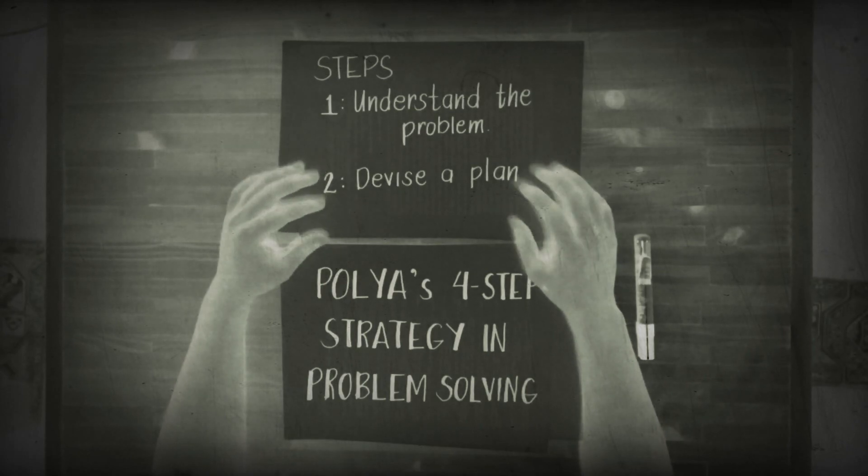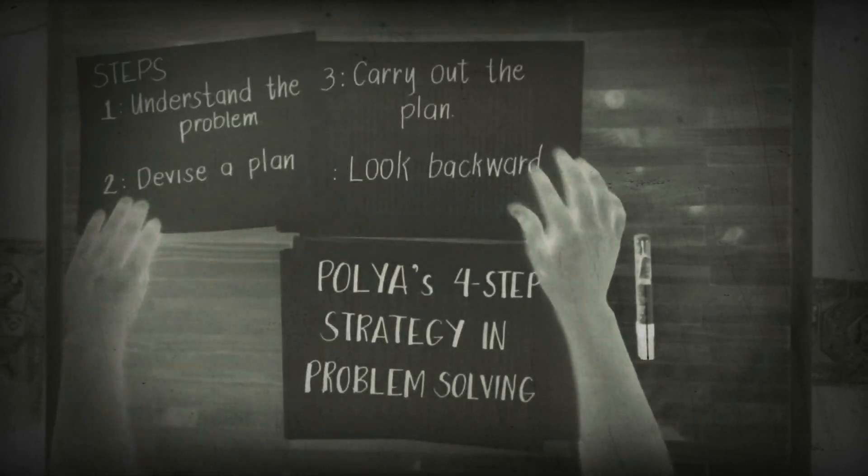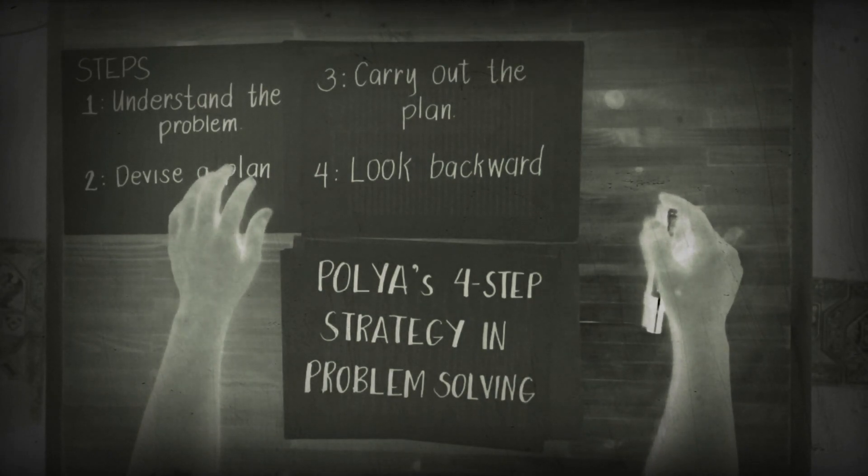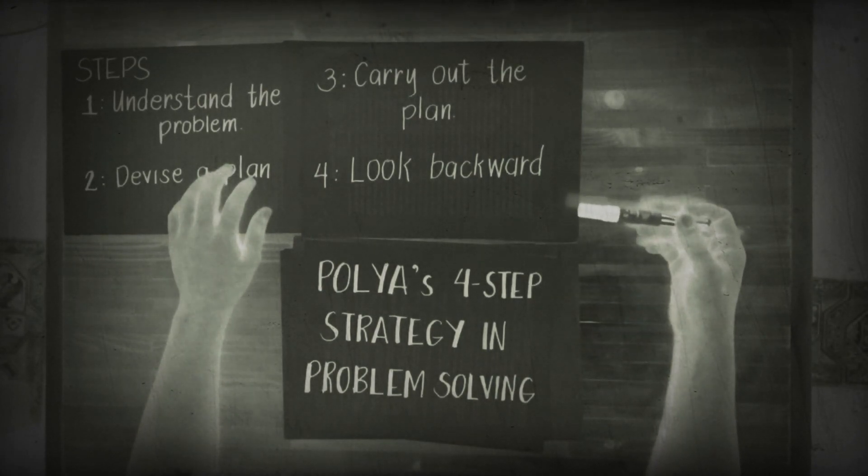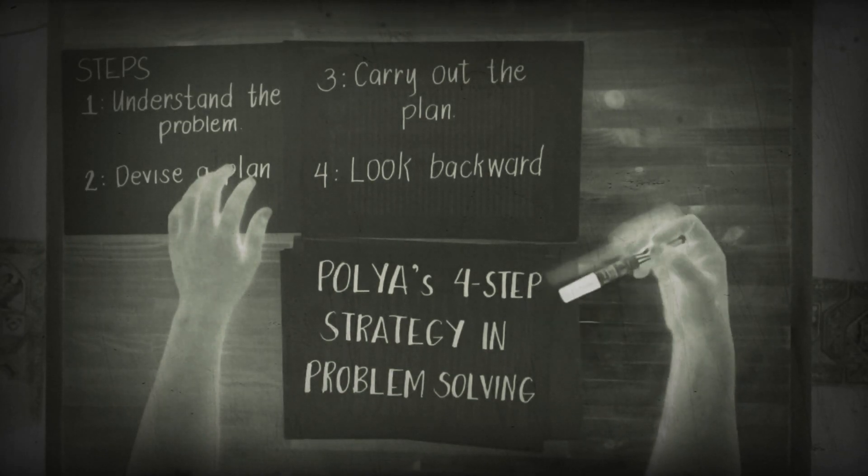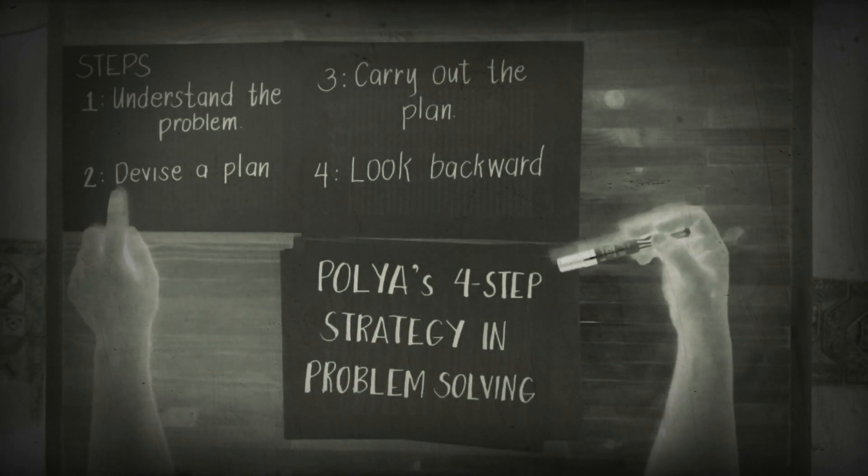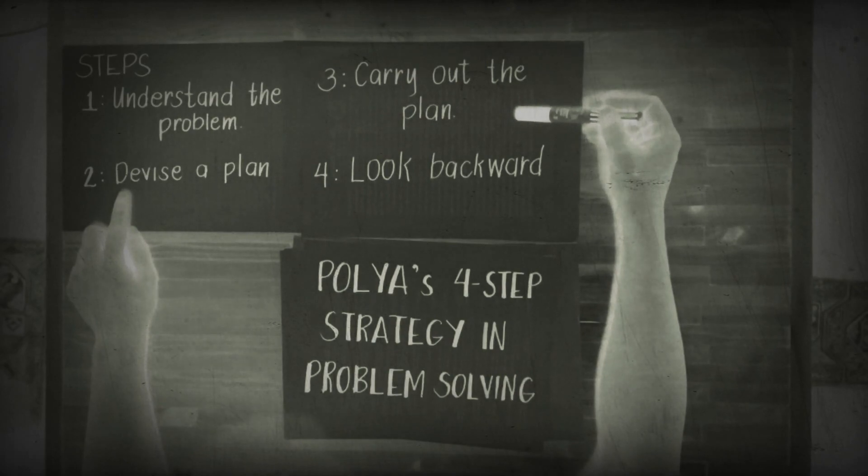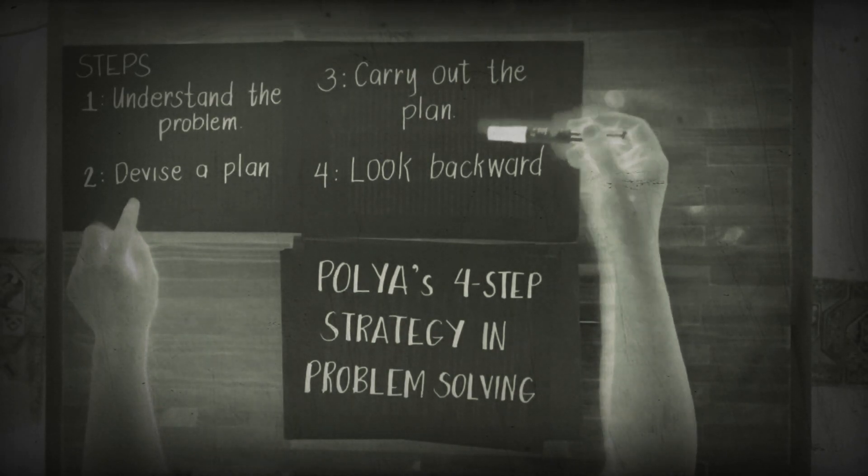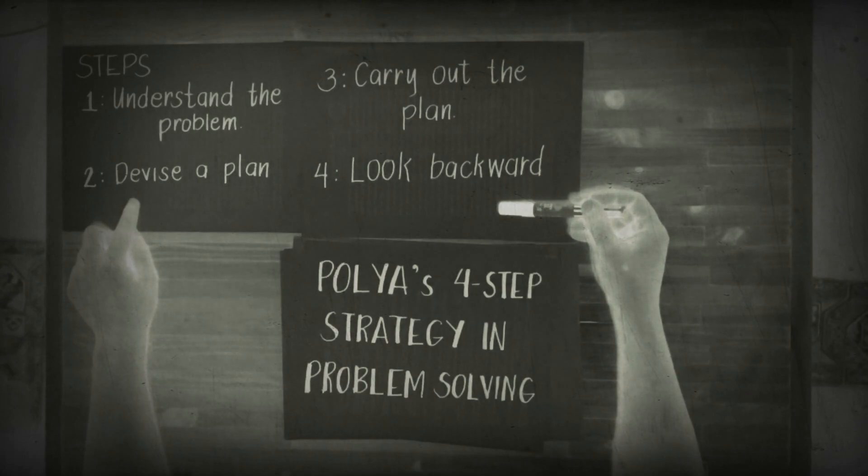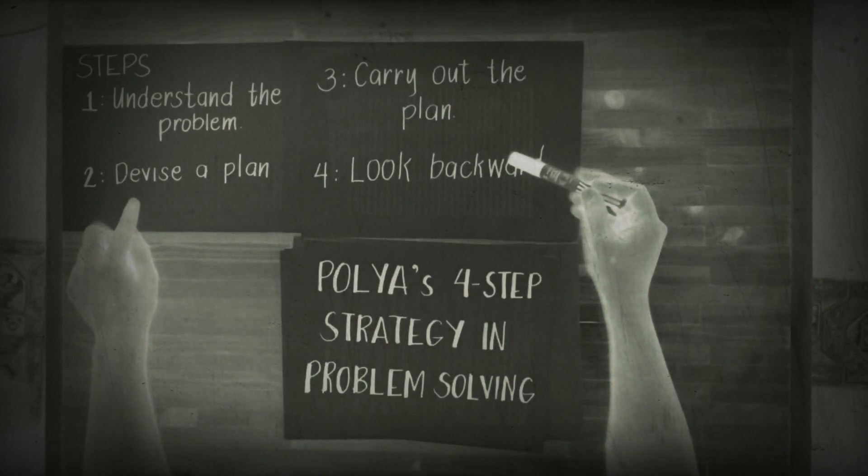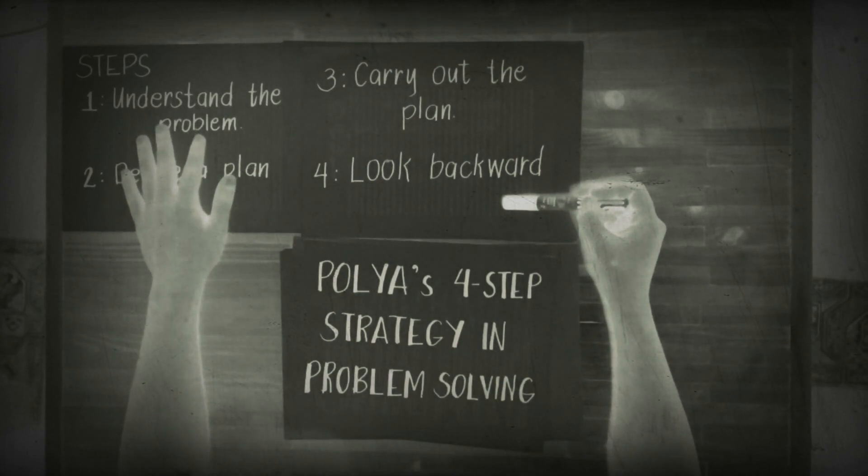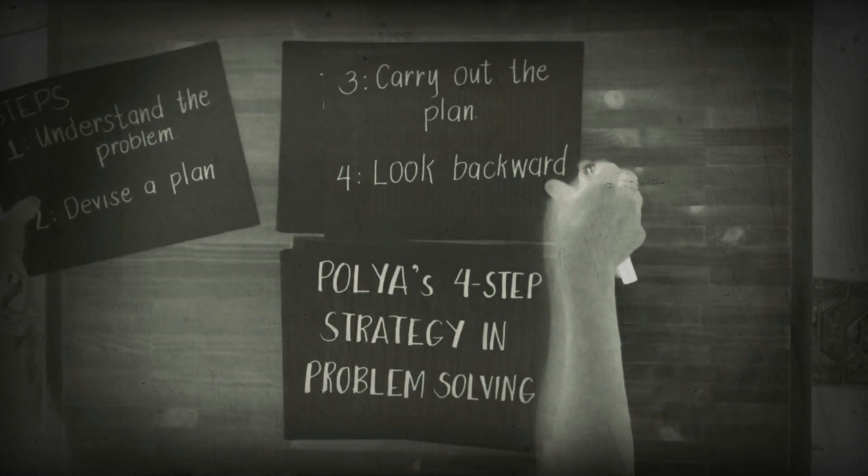In step three you have to carry out the plan. Whatever method that you thought of in step number two, you just have to implement that on step number three. Then after finding the answer in step three you have to proceed to step four which is looking backward. You just have to check whether your final answer is really the final answer on your problem.